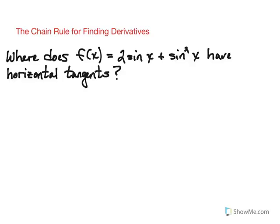Let's take a look at an example of how to use the chain rule to help us find the location of horizontal tangents to a curve. Remember that if we're going to have a horizontal tangent to a curve, that means the derivative there is going to equal zero.